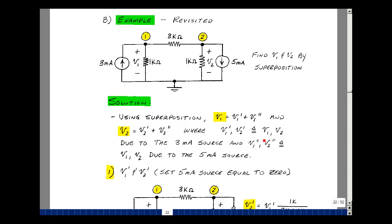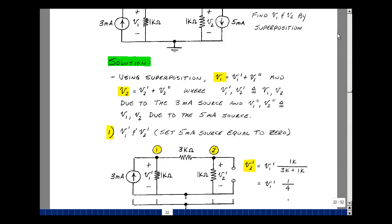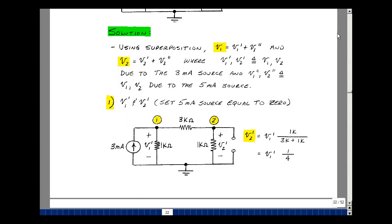Where V1 prime and V2 prime are the values of V1 and V2 just due to the 3 milliamp source, setting the 5 milliamp equal to 0. And then V1 double prime and V2 double prime will be the values of V1 and V2 by setting the 3 milliamp source equal to 0 and finding the results due to the 5 milliamp source. We're just going to add the results together.